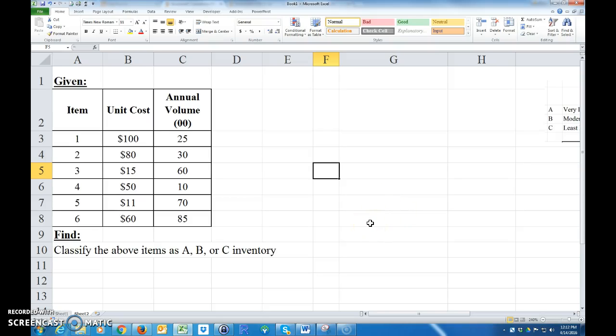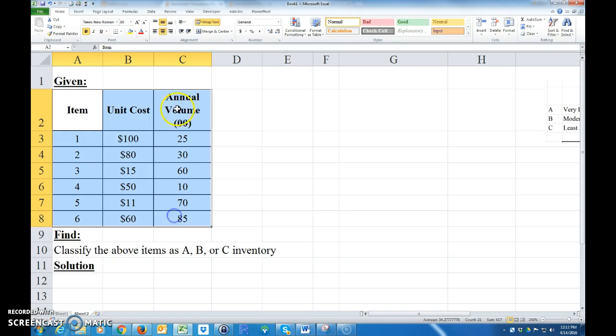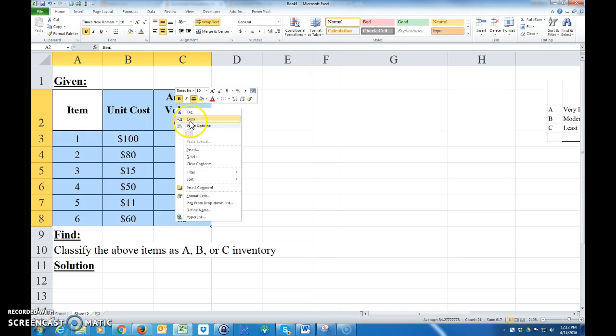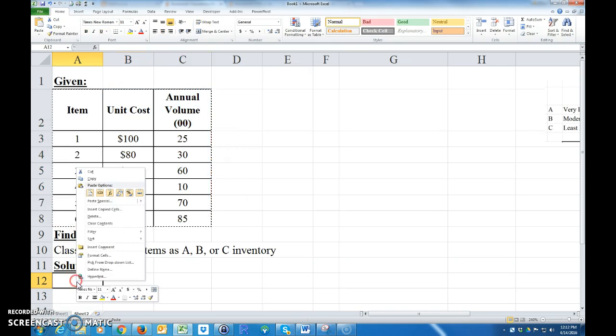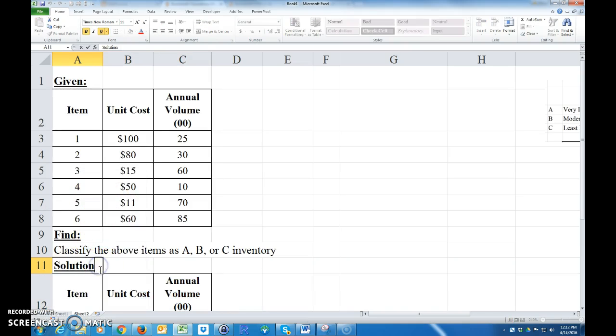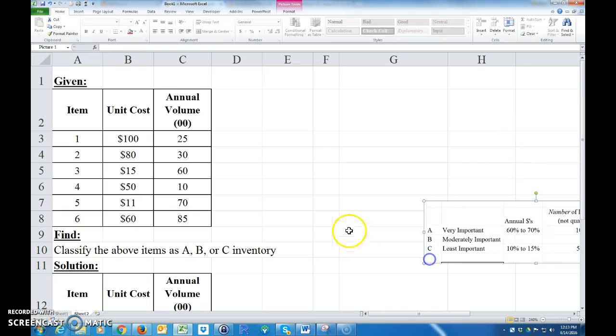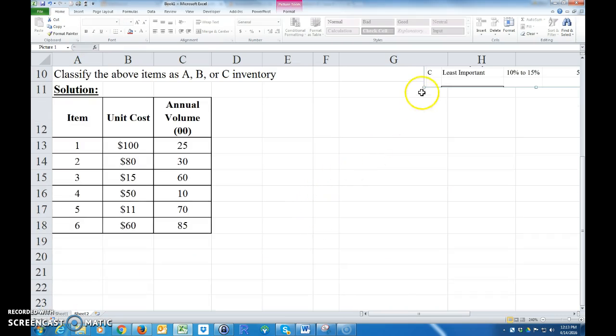Okay, I'm going to do a simple problem where we're going to classify these six items as A, B, or C inventory. So we're given these items and we want to classify them. So for a solution, I'll just go ahead and copy these items down into the solution area. And before, again, let's just kind of review A, B, or C inventory.